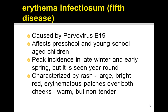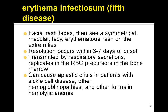Now let's review erythema infectiosum, also known as 5th disease. This is caused by parvovirus B19. It affects preschool and young school-age children typically, with peak incidence in late winter and early spring but it can be seen year-round. This is characterized by a rash that's large, bright red erythematous patches over both cheeks which are warm but non-tender. The facial rash fades and then you see a symmetrical macular lacy erythematous rash on the extremities. Resolution occurs within 3-7 days of onset.